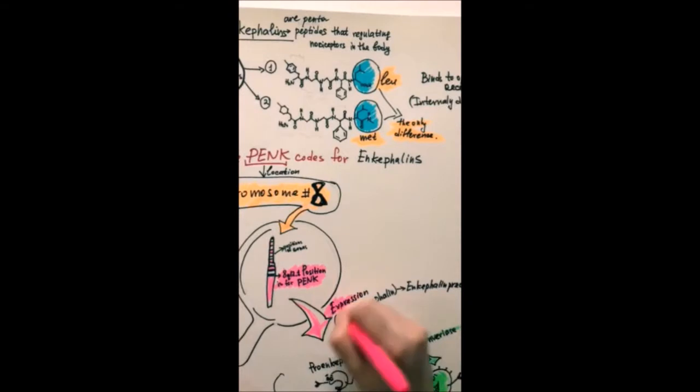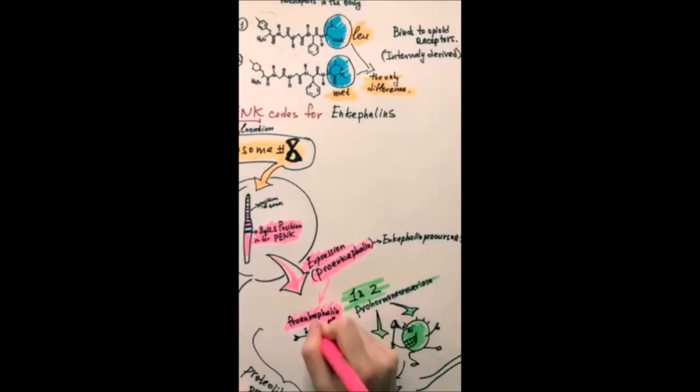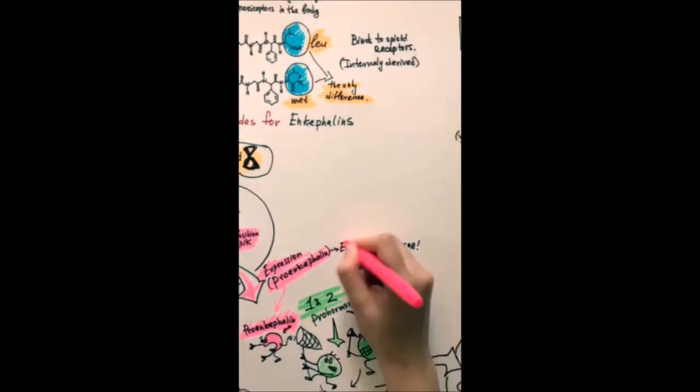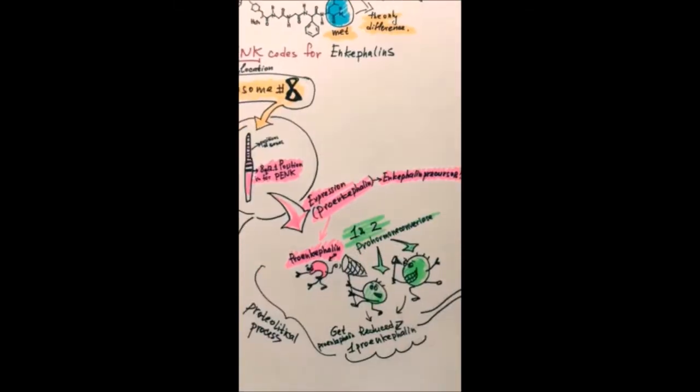See, when my mom was young, she didn't like dates. In my world, dating is called the proteolytical process. That's when my mom, Pro-enkephalin, ran away from potential boyfriends enzymes 1 and 2, Pro-hormone Convertases. Eventually, one of them won her heart, and quadruplets were born. That includes me.